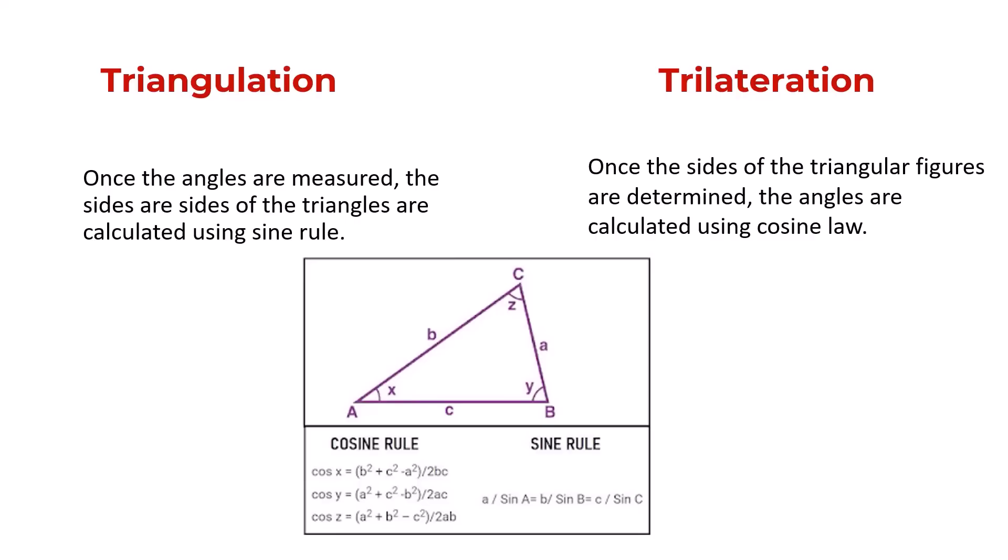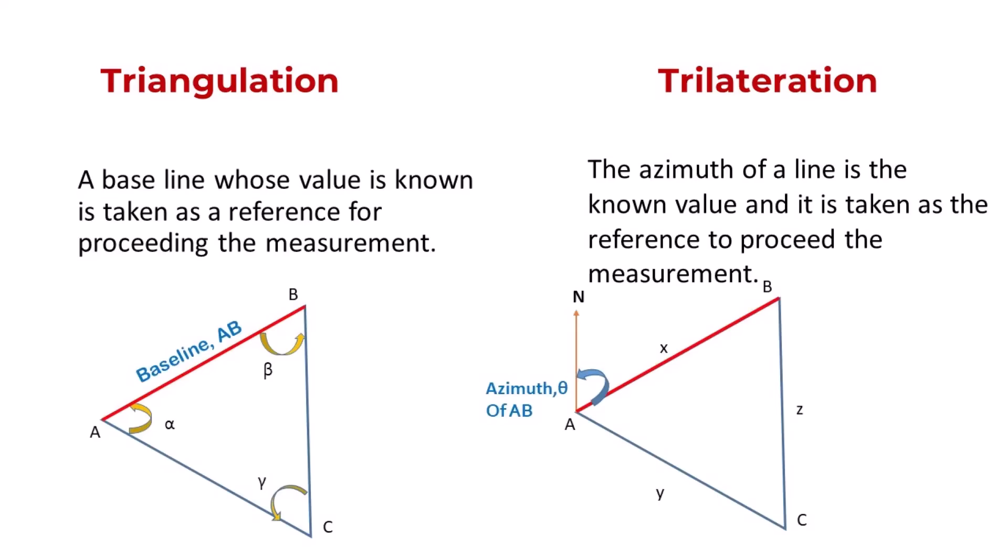In the above figure, triangulation is being explained where the triangle formed is A, B, C where AB is the known side of the triangle, that is baseline. We keep an instrument at A and B and the point C is sighted and the included angles CAB and CBA are determined using the instrument.